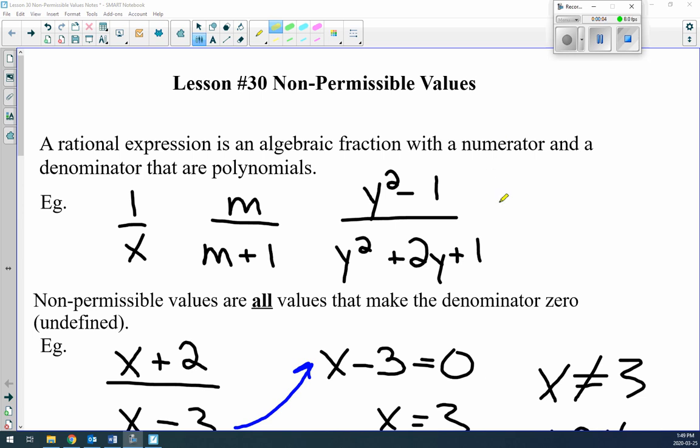Okay, so this is Greg Levine Precalculus. This is Lesson 30, Non-Permissible Values. A rational expression is an algebraic fraction with a numerator and denominator that are polynomials.